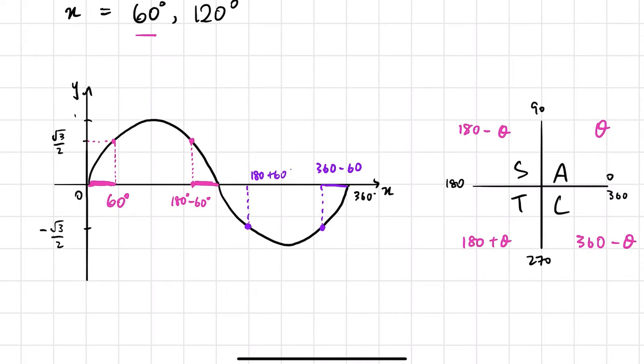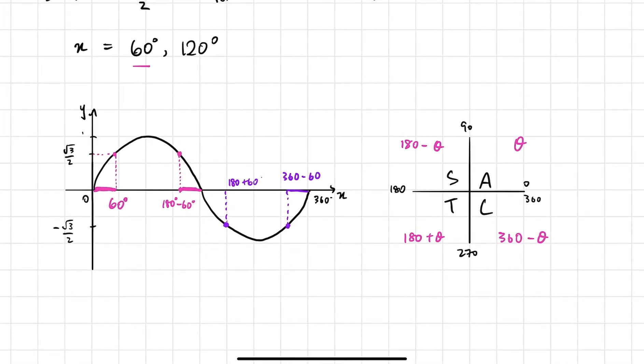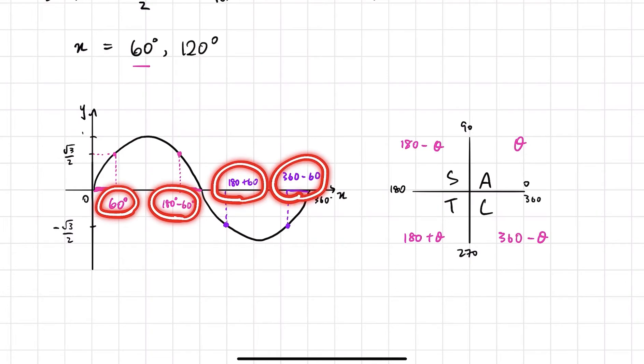You can kind of see where these guys come from. It's theta, 180 minus theta, 180 plus theta, and 360 minus theta.